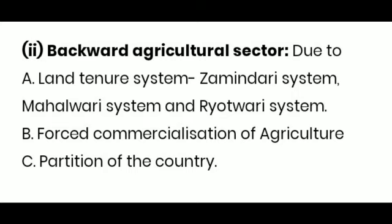Then we take up the backwardness of the agricultural sector. The basic problem that Indian agriculture was facing was a defective land tenure system, under which the actual tiller was not the cultivator of the soil and did not have the right to make any changes related to cultivation.